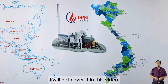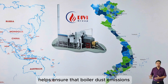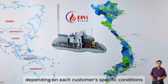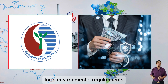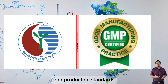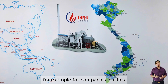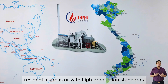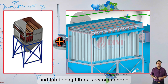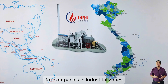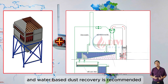In practice, combining these methods helps ensure that boiler dust emissions meet environmental standards. Depending on each customer's specific conditions such as space, finances, local environmental requirements, and production standards, different dust recovery systems may be combined. For example, for companies in cities, residential areas, or with high production standards, a combination of multi-cyclones and fabric bag filters is recommended. For companies in industrial zones, a combination of multi-cyclones and water-based dust recovery is recommended.